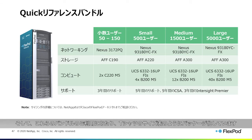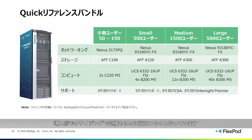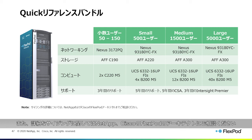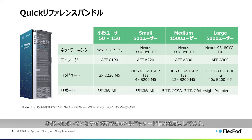Leveraging those bundles, we've created t-shirt sizing starting points for the solution. These are reference starting points helpful for initial sizing estimation — certain assumptions have gone into the sizing. We recommend consulting with FlexPod architects from NetApp and Cisco for detailed sizing guidance. These t-shirt sizes are available in four configurations to give you a perspective on what's needed for specific sizes of different VDI environments.